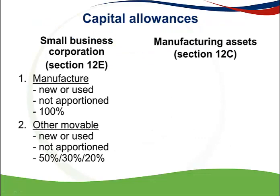We will now discuss the Section 12C capital allowance. You must first determine whether the business entity is a small business corporation. When it is not a small business corporation, your next step is to determine the nature of the asset. If the asset is plant and machinery used directly in a process of manufacture, then a Section 12C allowance can be claimed. This allowance can be claimed on new or used manufacturing assets, and it is not apportioned.